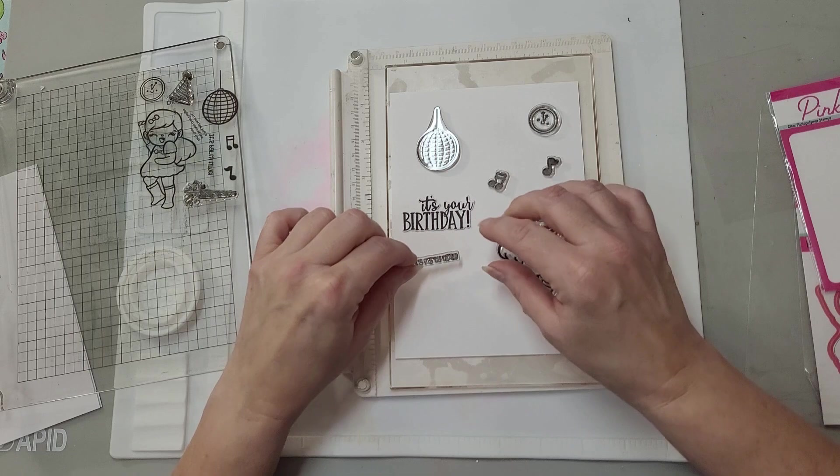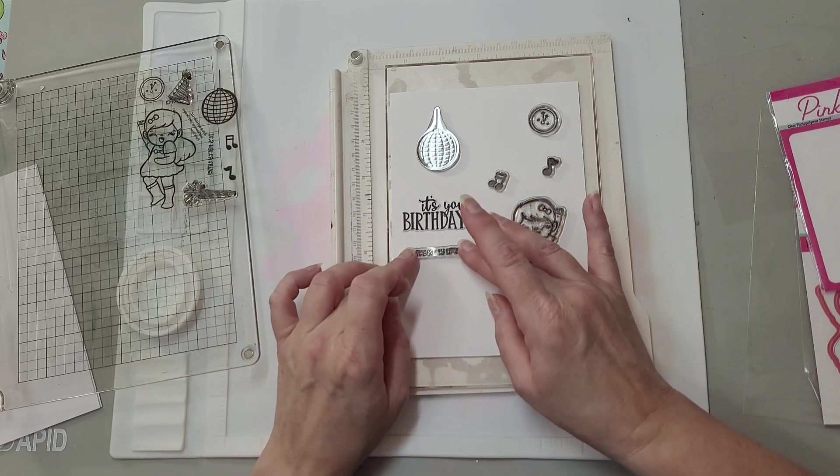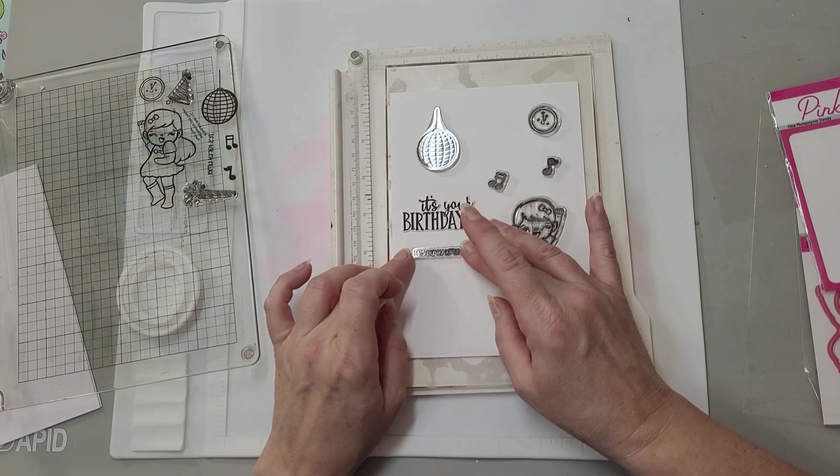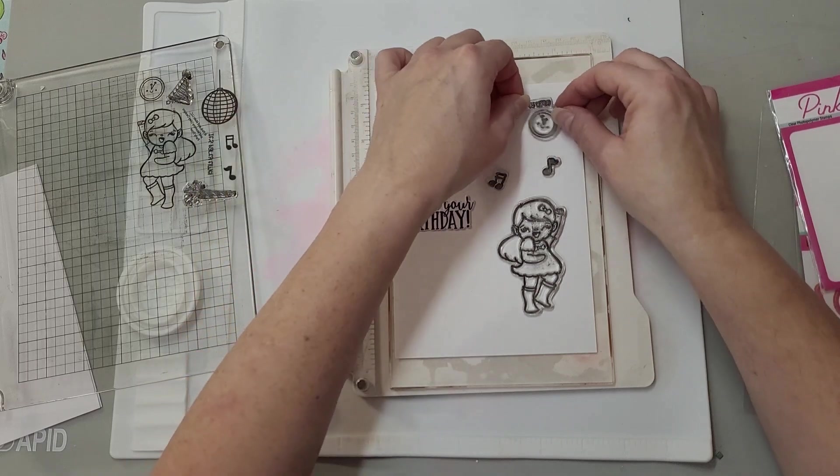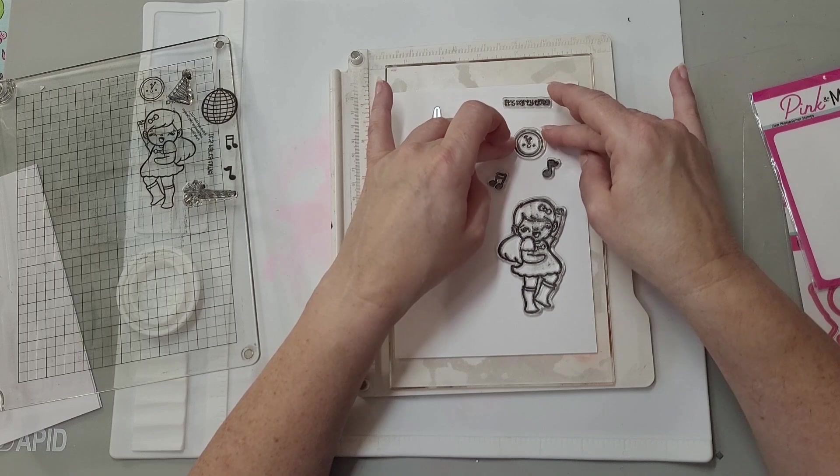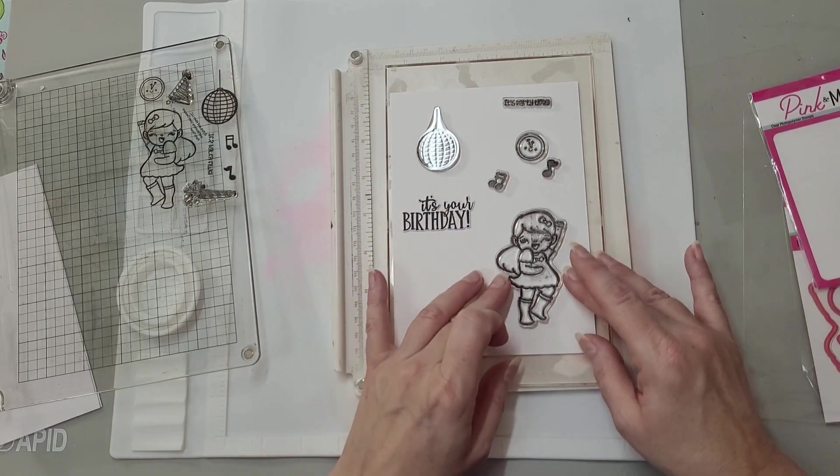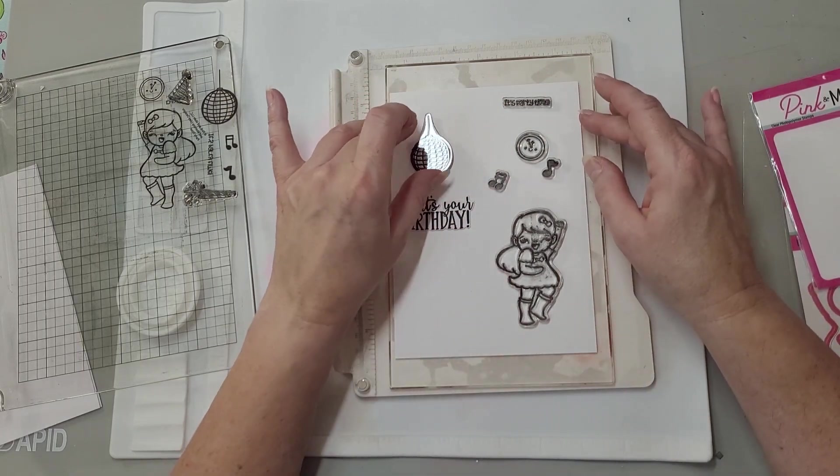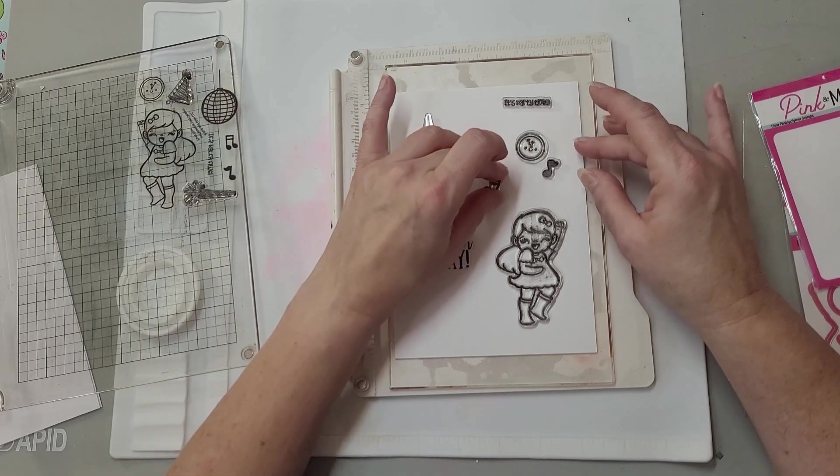I think I will put It's Party Time on the card since I'm using the clock. Or maybe it should be this way. Move the clock down, move her down a little bit.